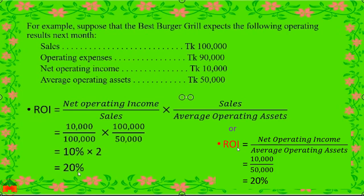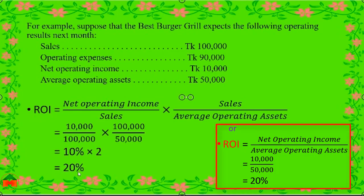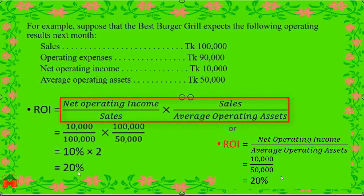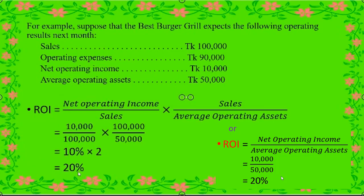We can verify using the short formula: net operating income divided by average operating assets = 10,000 ÷ 50,000 = 20%. Both formulas give the same result, but the broad formula is more helpful for managers in decision making, as it shows how to increase margin and turnover to achieve a higher ROI. Thank you.